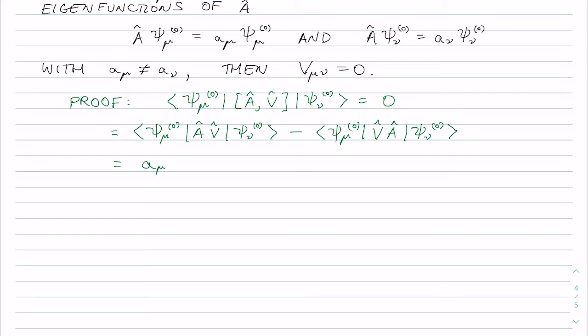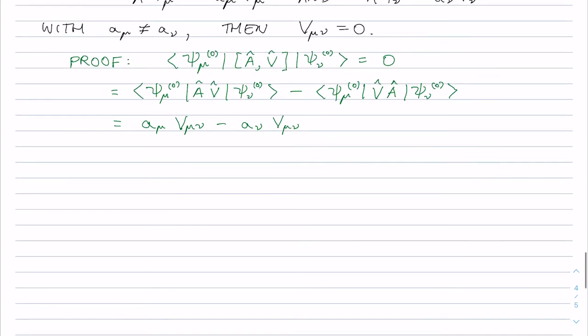And then I can apply the A operator to the left on the first one, which gives me a_mu and then V_mu_nu minus, and now I can apply the A operator to the right and I'll get a_nu V_mu_nu. Right, and I should probably say that a_mu is real here but okay I can put a little star there if you like. And so that's equal to a_mu star minus a_nu V_mu_nu equals zero.